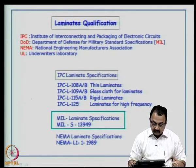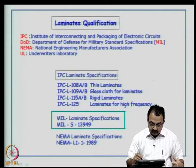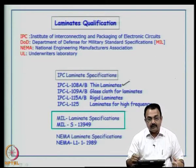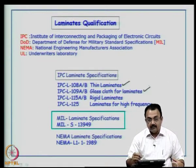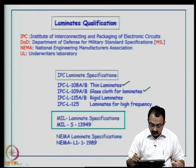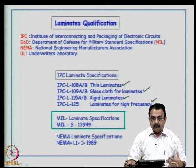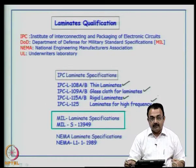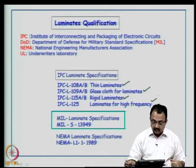The IPC laminate specifications pertain to various areas. For example, 108 A and B pertain to thin laminate structures; 109 A and B pertain to glass cloth laminates — their physical properties, thicknesses, and qualification tests. 115 AB is for rigid laminates; 125 is for laminates for high frequency applications. Epoxy cannot be used for all applications — for high-frequency applications, you may need better materials such as Teflon or polyimides. You would look for those kinds of materials.